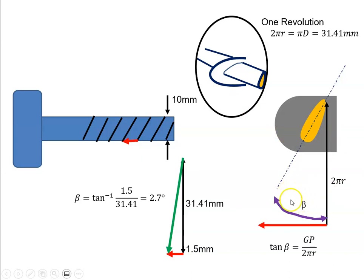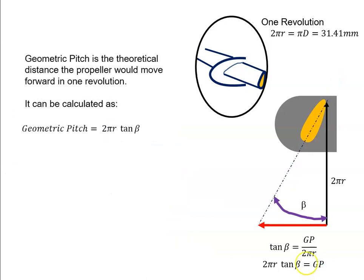We can see then that the tan of the angle is the opposite — the geometric pitch — over the adjacent, which is 2πr. Or rearranging: 2πr·tan(blade angle) equals the geometric pitch. So to recap: the geometric pitch is the theoretical distance the propeller would move forward in one revolution, and we calculate it as 2πr·tan(β).